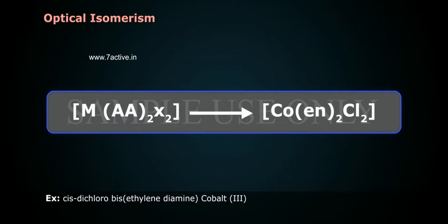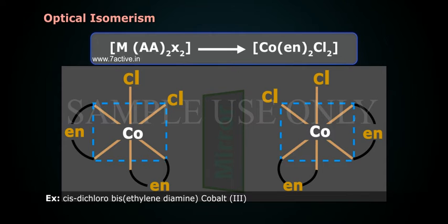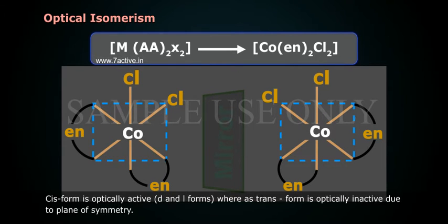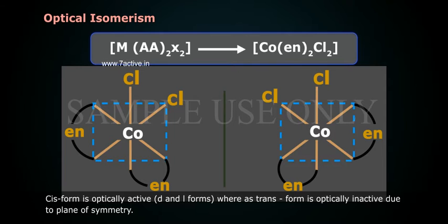Example: CIS-dichlorobis(ethylenediamine)cobalt(III). The cis form is optically active, whereas the trans form is optically inactive due to the presence of a plane of symmetry.